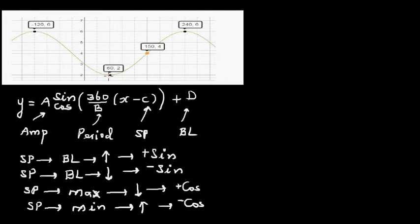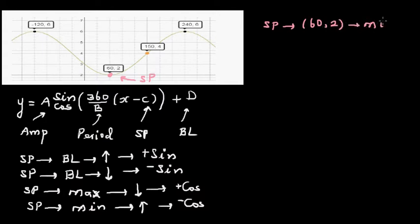Let's take this as the starting point. If the starting point is at the minimum and the graph is going up, it's a negative cosine graph. So our starting point is (60, 2), which is the minimum — this implies it is a negative cosine graph. That's the first decision we need to make.